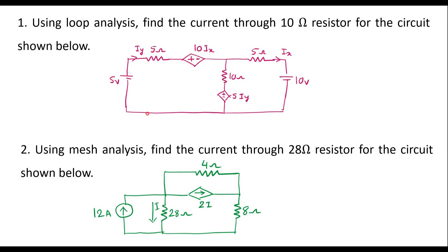In this video, let me consider two numericals on loop analysis. Using loop analysis, find the current through the 10 ohm resistor — this is one circuit. And using mesh analysis, find the current through the 28 ohm resistor — this is another circuit. Let me consider the first example.